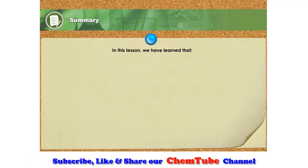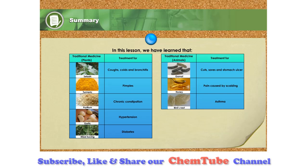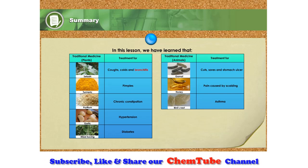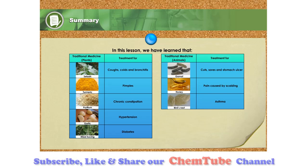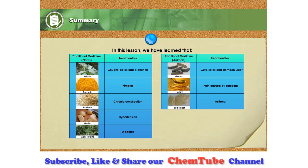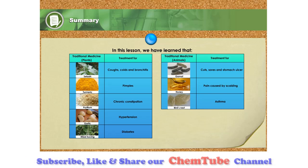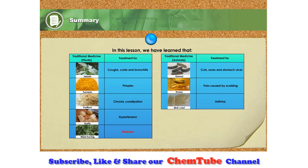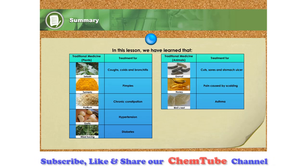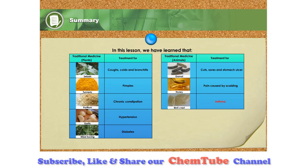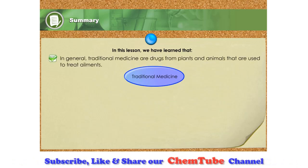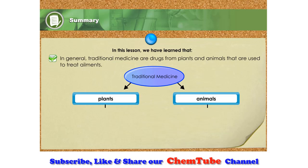In this lesson, we have learned that the two tables show examples of traditional medicine from plants and animals. Celase plants are used to treat coughs, colds, and bronchitis. Turmeric can be applied directly to treat pimples. Psyllium husk is used to treat constipation. Garlic can help reduce high blood pressure. Misai kucing is used to reduce the sugar level in diabetic patients. Water boiled with gamut is used to treat cuts, sores, and stomach ulcer. Honey can be applied directly on scalded skin to relieve the pain. Bird's nest soup is used to treat asthma. In general, traditional medicines are drugs from plants and animals that are used to treat ailments.